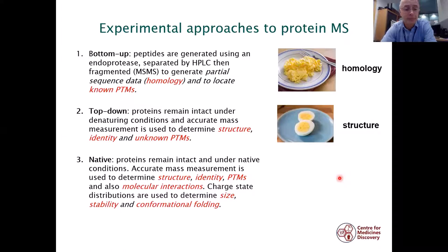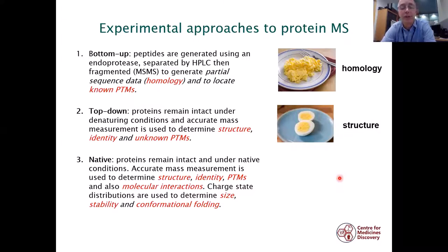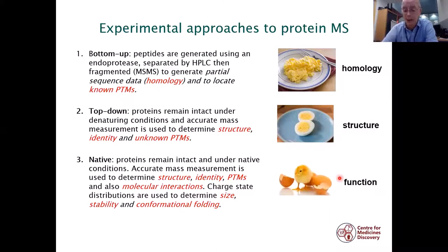The second method we'll cover today is top-down, where proteins remain intact under denaturing conditions and we use accurate mass measurement to identify the protein and any unknown post-translation modifications. The analogy here is we know this is egg because it looks like an egg — we have structural information we didn't have before. A third approach is native, where proteins remain intact under native conditions, and we can use accurate mass to identify structure, identity, post-translation modifications, and molecular interactions, plus use charge state distribution to get biophysical data.